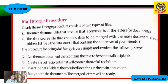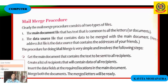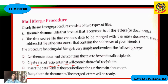The mail merge process involves two types of files. First, the main document file contains text that is common to all letters — the same date, place, and content. Second, the data source file contains the data to be merged — such as the names and addresses of all your friends.